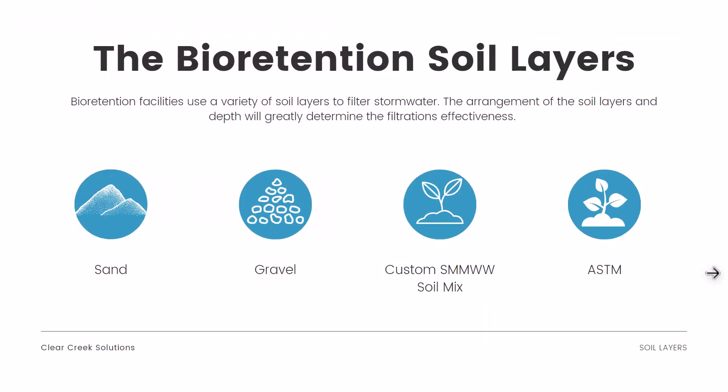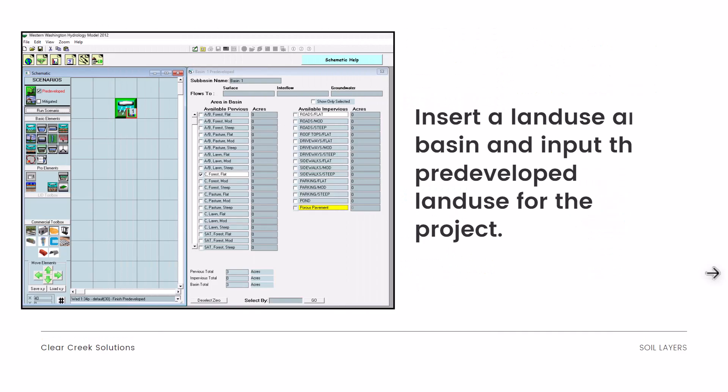The bioretention facility uses a variety of soil layers to filter stormwater. The arrangement of the soil layers in depth will greatly determine the filtration's effectiveness — how effectively we're able to infiltrate, retain, detain, and mitigate the water depends on the depth and type of those soil layers. In western Washington specifically, we have a combination of sand, gravel, a custom soil mix, and ASTM soils to filter out the water.